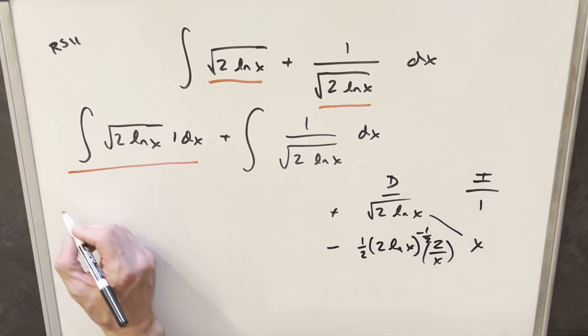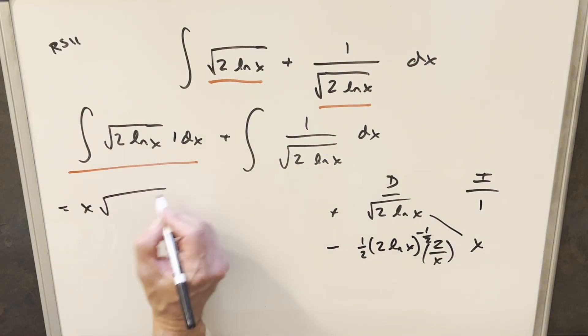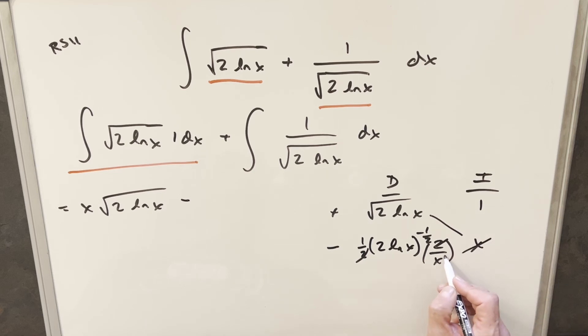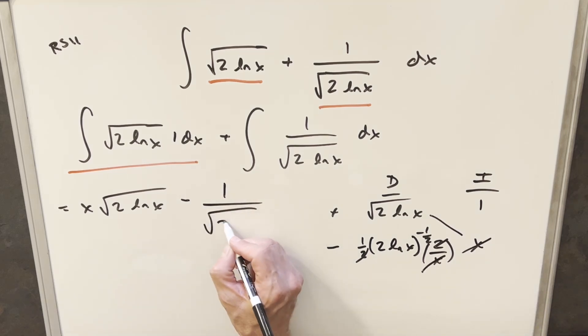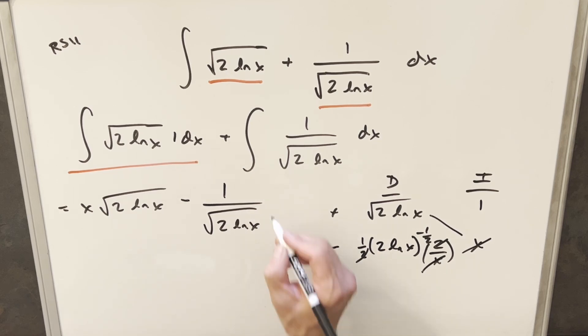So we're going to have part of our solution right here on the diagonal. We'll just write this out. We'll have x square root of 2 ln x. And we write this out as an integral. A two is going to cancel here, a two is going to cancel here, and x is going to cancel here. So when we do this, we're just going to end up with 1 over square root of 2 ln x dx.